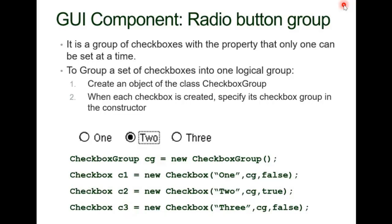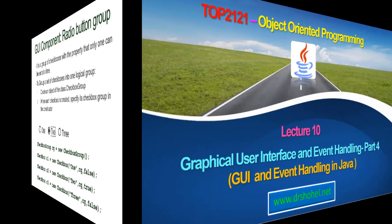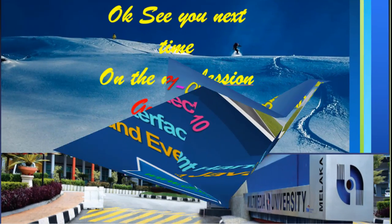You can define whether a checkbox is checked or not. If you pass false, all will be unchecked; if you use true, that one will be selected — because it uses a boolean value.